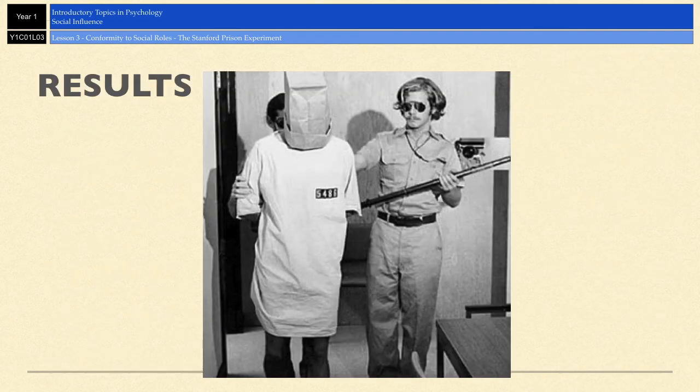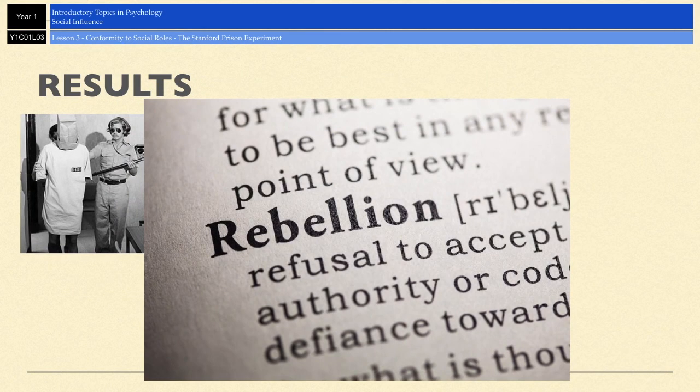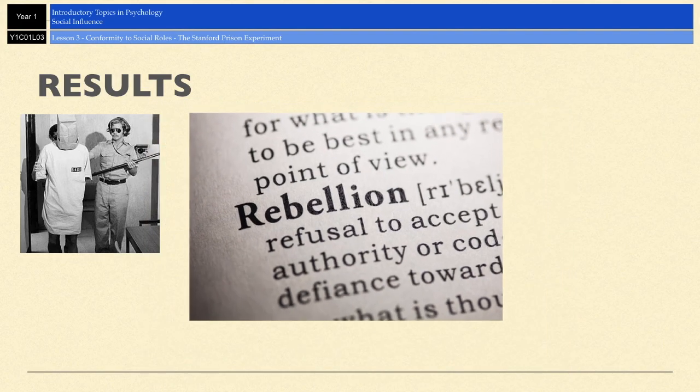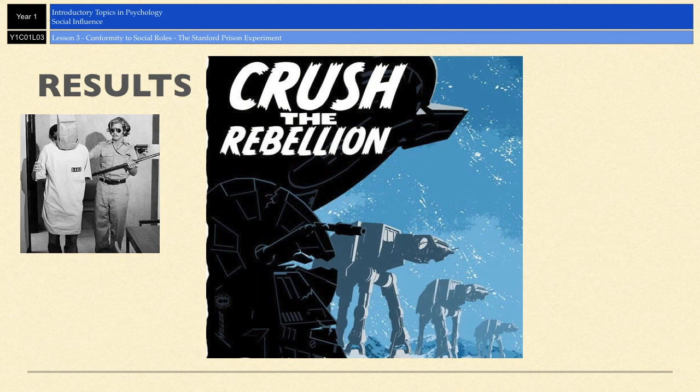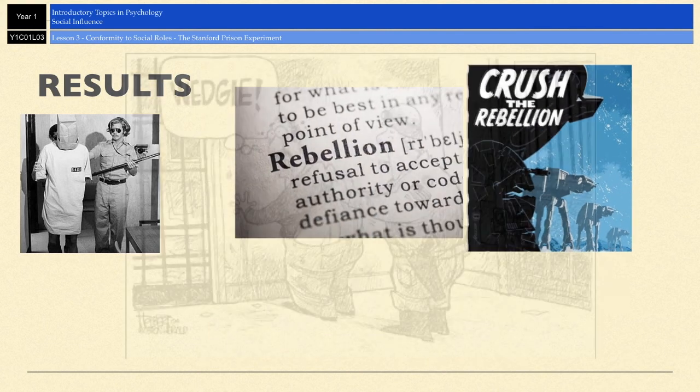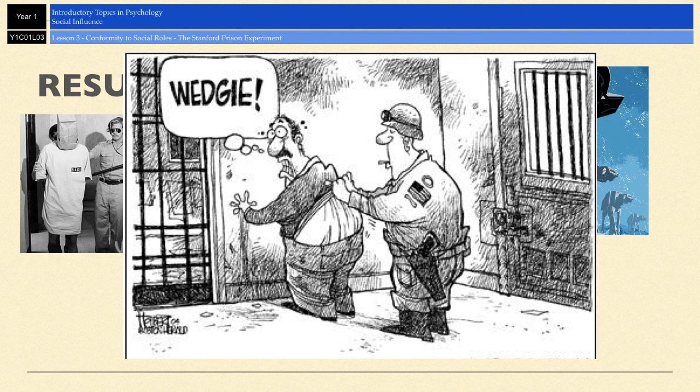Both prisoners and guards quickly identified with their social roles, so the study started well. However, within days the prisoners rebelled against the guards, but that didn't last very long because the guards quickly crushed the rebellion, after which the guards increasingly became very abusive towards the prisoners.